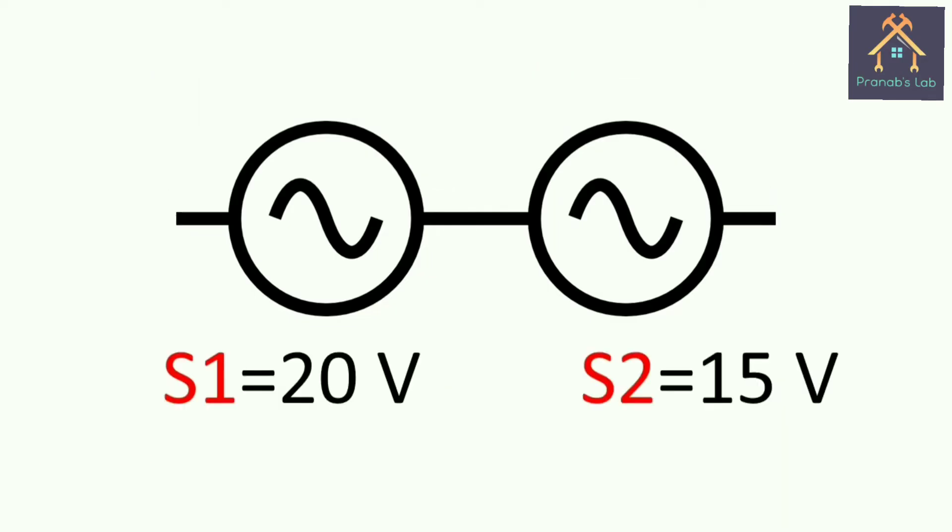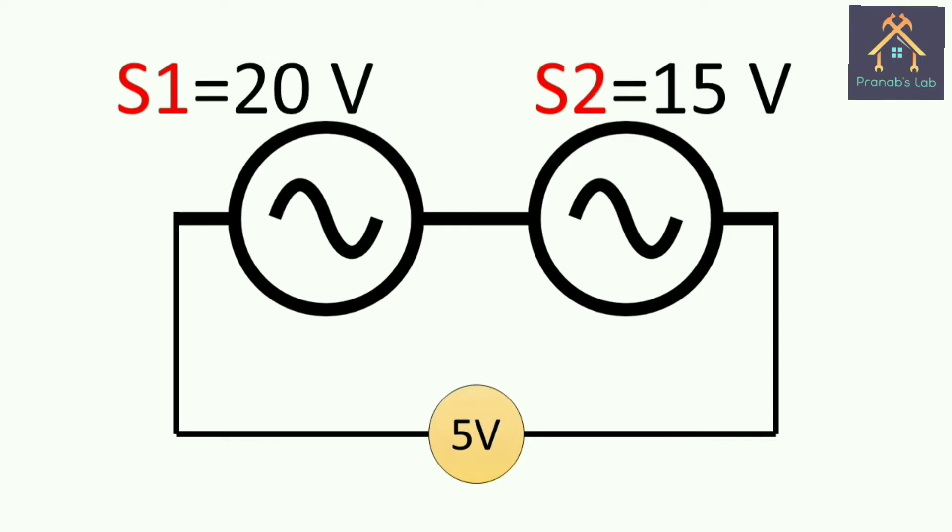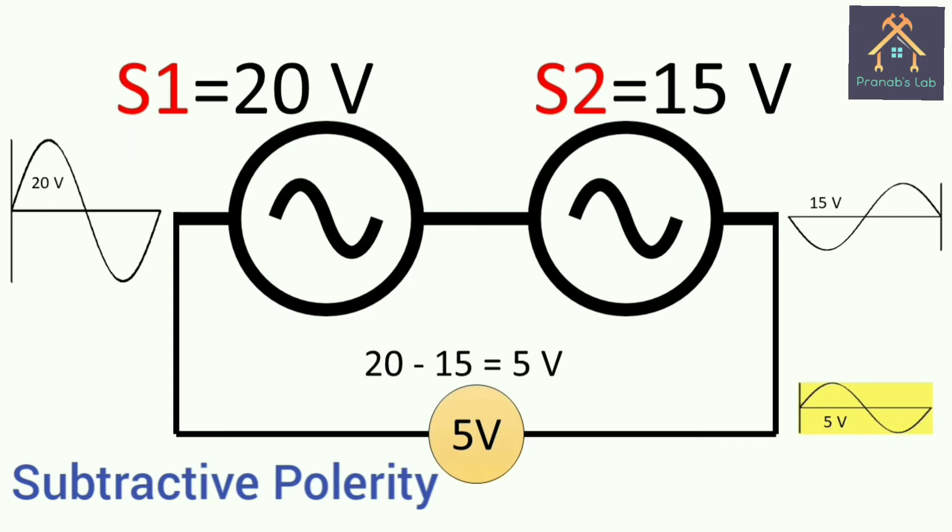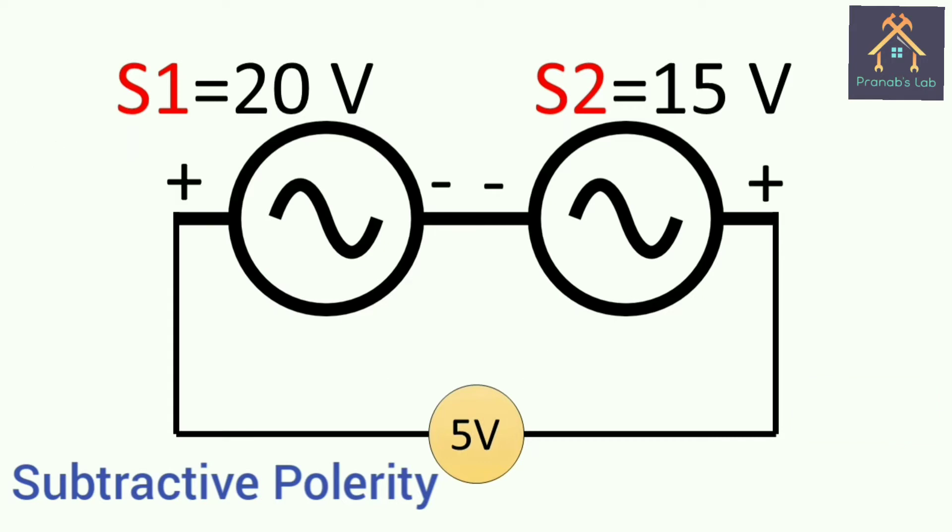Now if the voltmeter shows 5V as resultant voltage of the two sources S1 and S2, then we can say that the sources are connected in subtractive polarity, and they can be indicated as shown in figure.